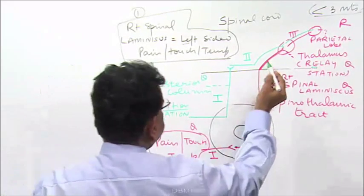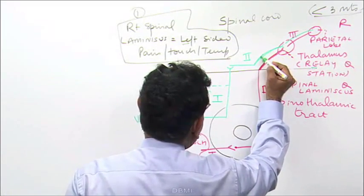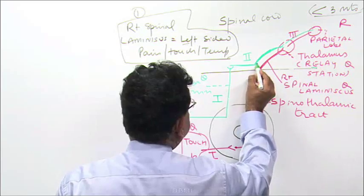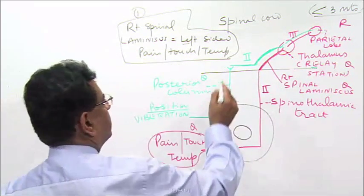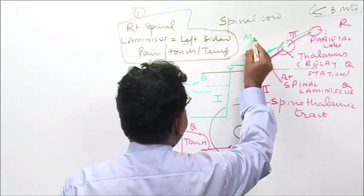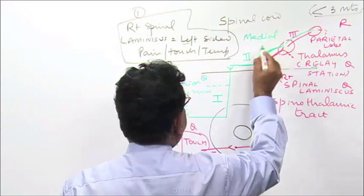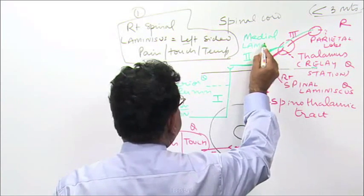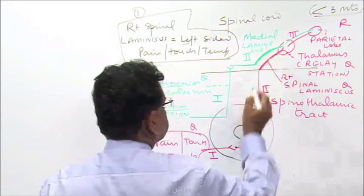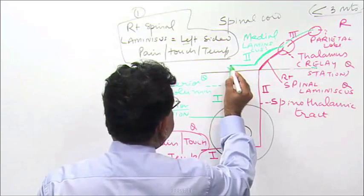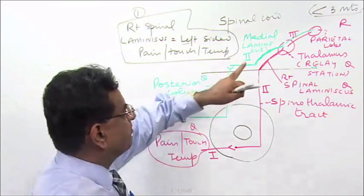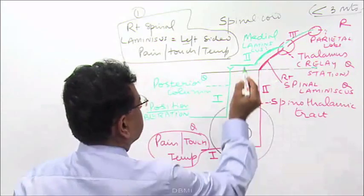Point to be noted: this part of the second order neuron — the whole second order neuron on the right side — is known as the medial lemniscus. The name changes here to medial lemniscus. Remember, it is simply the continuation of the second order neuron going toward the thalamus, and this is on the right side.